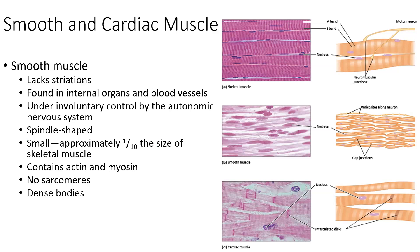Smooth muscle lacks striations. Striations are brought about from the sarcomere — those repeating units found along the myofibrils. Because smooth muscle does not have sarcomeres, it does not appear striated. Striated refers to the string-like texture we even see on meat — when we look at chicken or other muscle tissue, the striated appearance is created by sarcomeres. Smooth muscle has no sarcomeres and therefore no striated appearance.